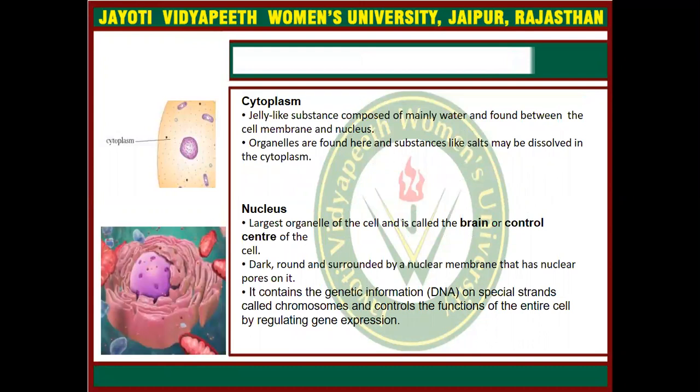The next organelle is cytoplasm. Cytoplasm is the jelly-like substance between the cell membrane and the nucleus. The nucleus is present in the cytoplasm. All the organelles are present in the cytoplasm, such as mitochondria, ribosomes, endoplasmic reticulum, and Golgi complex.